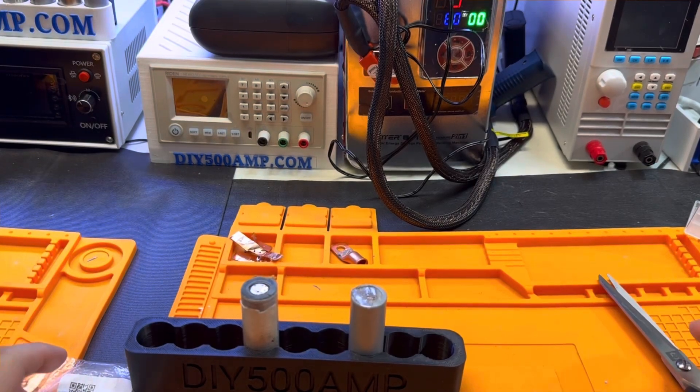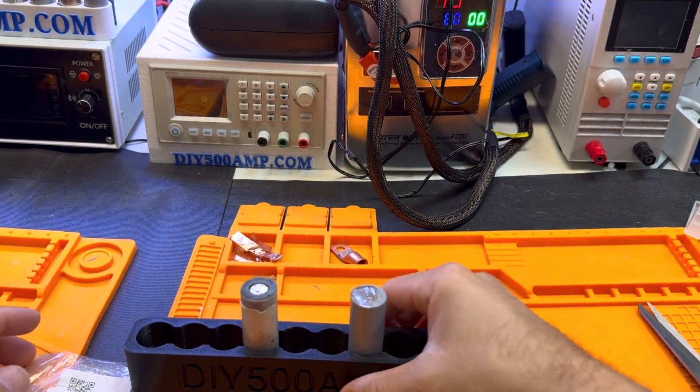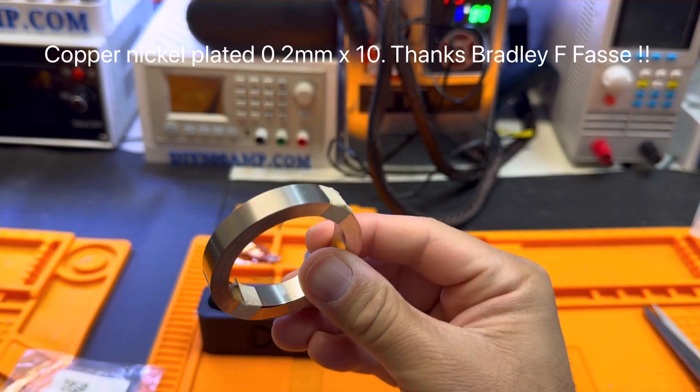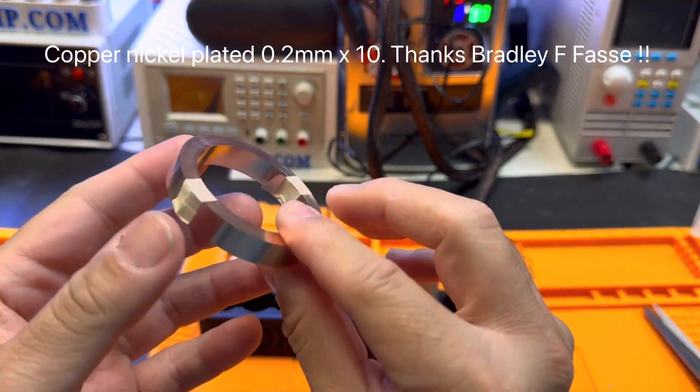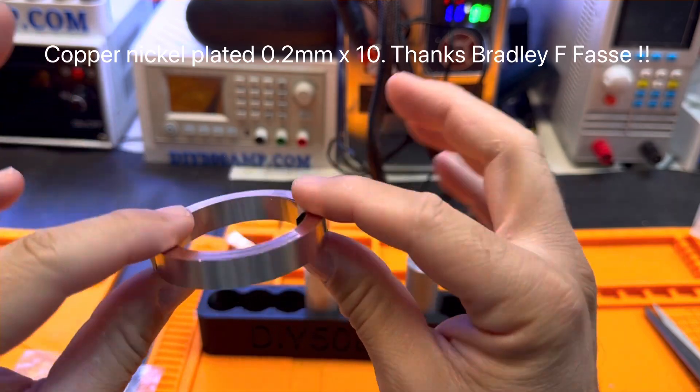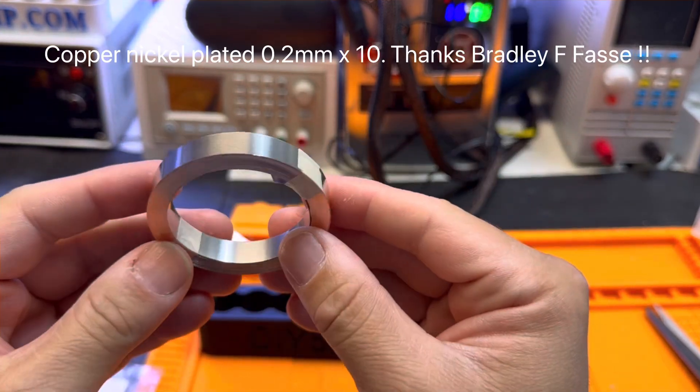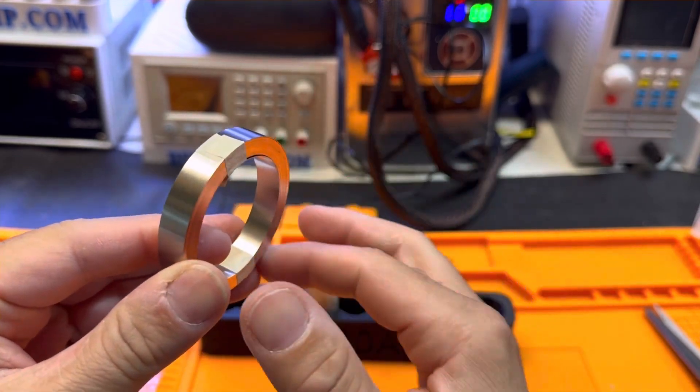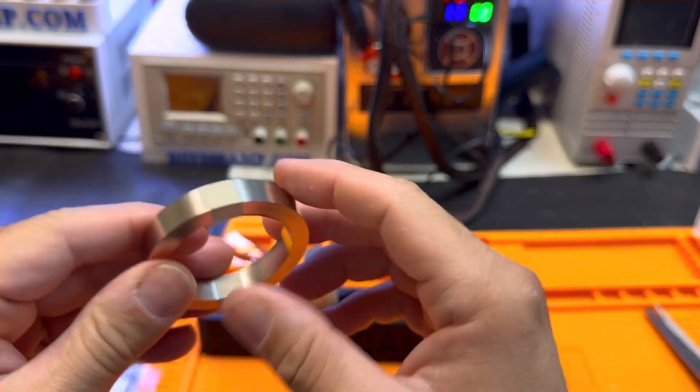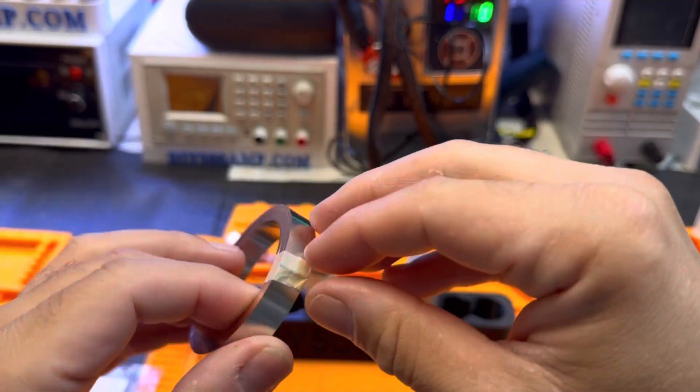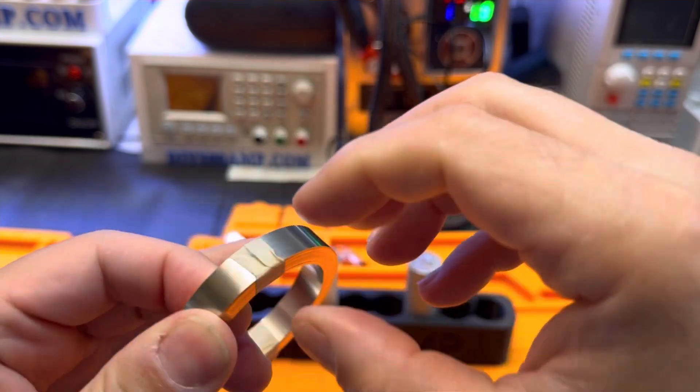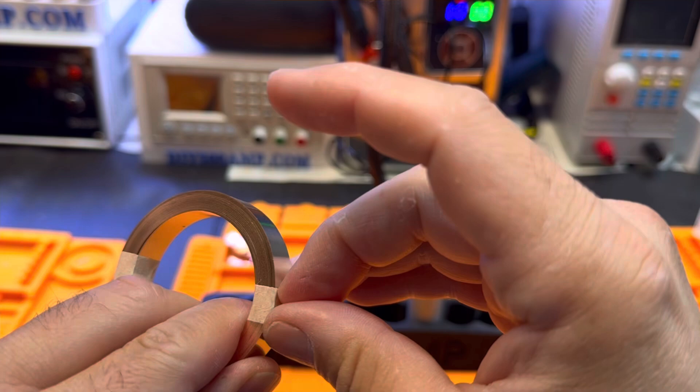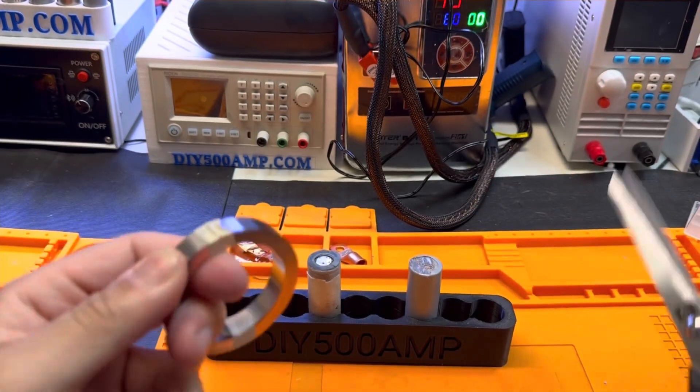All right YouTube, thank you for my subscribers. Someone sent me these - this is copper nickel plated. Look at this, it's basically pure copper with nickel on top. Someone in the group was asking if we can weld this directly to a battery, and that's a great question. We're going to test now if that is possible.